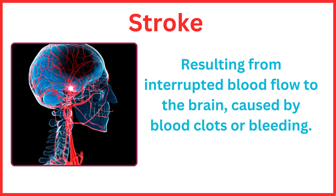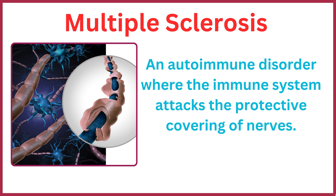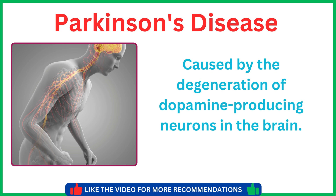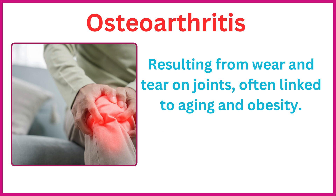Stroke results from interrupted blood flow to the brain, caused by blood clots or bleeding. Kidney disease is caused by diabetes, hypertension, and genetic conditions affecting kidney function. Multiple sclerosis is an autoimmune disorder where the immune system attacks the protective covering of nerves. Parkinson's disease is caused by the degeneration of dopamine-producing neurons in the brain. Osteoarthritis results from wear and tear on joints, often linked to aging and obesity.